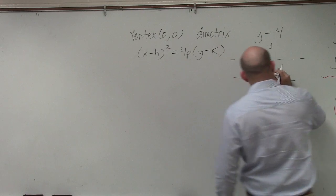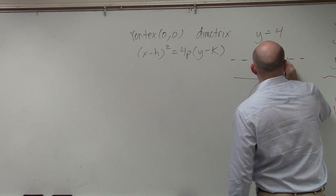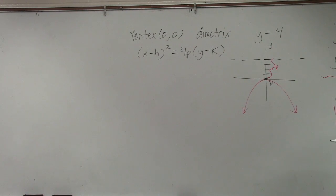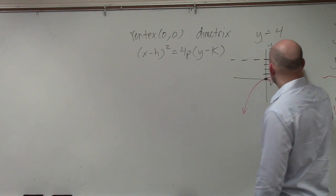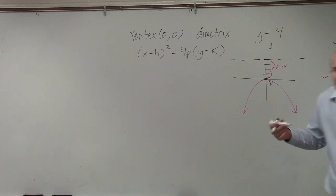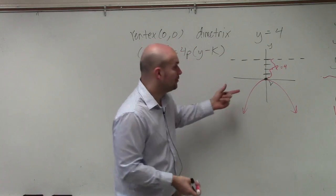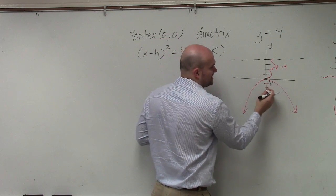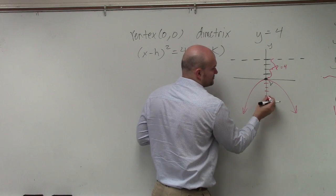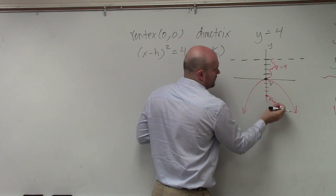Now again, we know that the distance from the vertex to the directrix is p, which is equal to 4 in this case. However, the real value of p is actually the distance from the vertex to the focus, which is still going to be the same value of 4, but it's going to be in the negative direction. So we could say that's our focus.